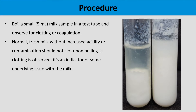Now let's see how to perform the Clot on Boiling Test and how to interpret the results. Boil a small amount of milk — around 5 ml — in a test tube and observe for clotting or coagulation. Normally, fresh milk without increased acidity or contamination should not clot upon boiling.